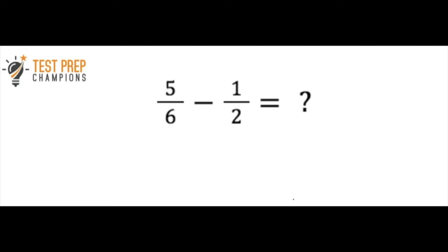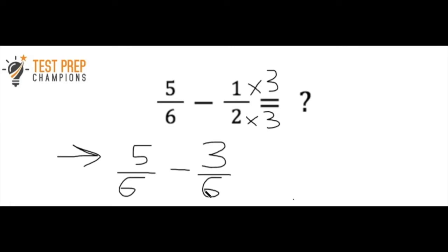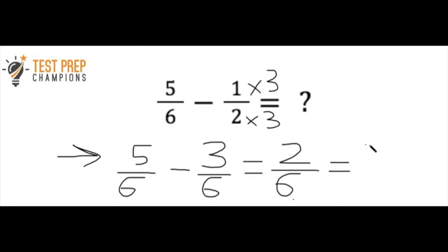As always, when adding or subtracting we check the denominators. We see a six in the first fraction and a two in the second — they're not the same. Two times three gives me six, so we multiply both the top and bottom of the second fraction by three. We now have five over six minus three over six. Five minus three gives me two, and we keep the same denominator. But two over six is not in simplest form, so we divide top and bottom by two: two divided by two is one, six divided by two is three. The final answer is one-third.